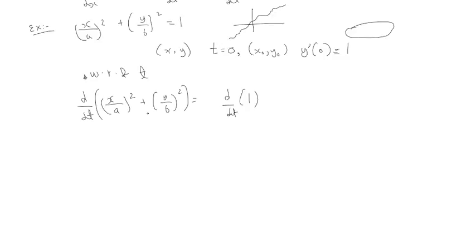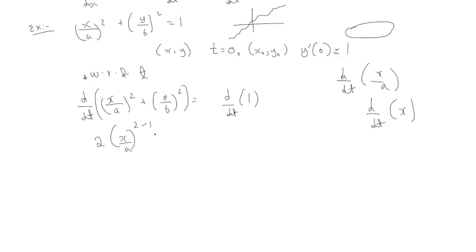We're going to differentiate each term individually. Applying the power rule to (x/a)²: the power comes down, we write (x/a) to the power 2-1, and then differentiate what's inside the bracket — x divided by a — with respect to t. Since we're differentiating with respect to t, not x, we multiply by dx/dt. If we were differentiating with respect to dx, the terms would cancel, but here we get dx/dt.